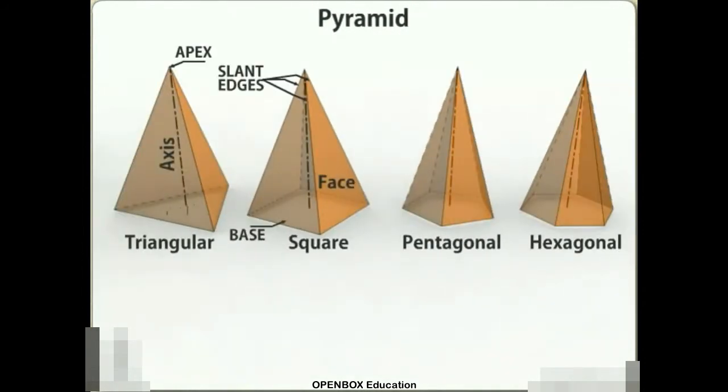Pyramid. This is a polyhedron having a plane figure as a base and a number of triangular faces meeting at a point called the vertex or apex. The imaginary line joining the apex with the center of the base is its axis. A right regular pyramid has its axis perpendicular to the base which is a regular plane figure. Its faces are all equal isosceles triangles.